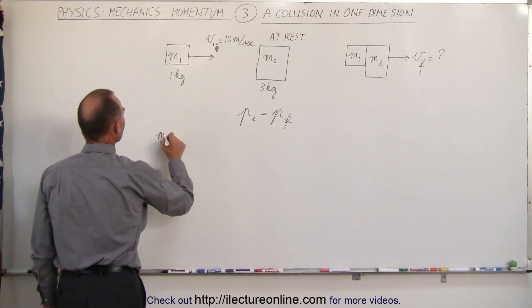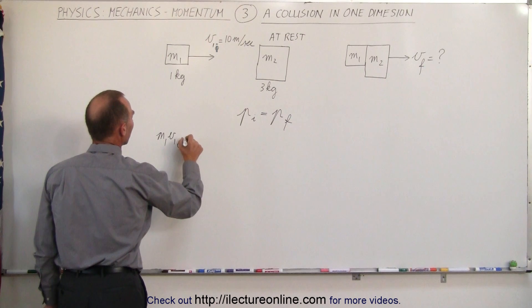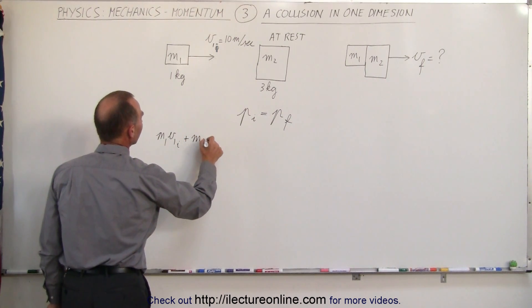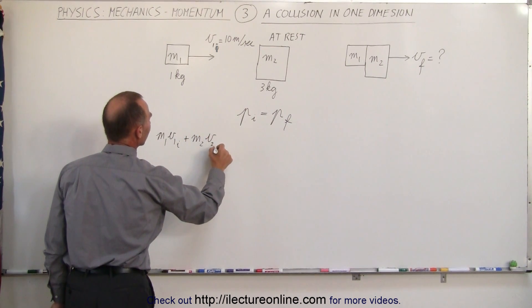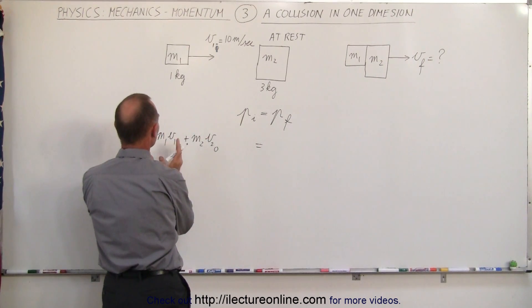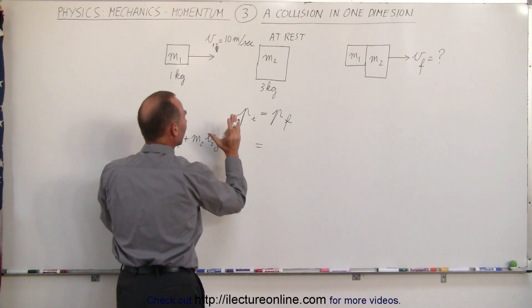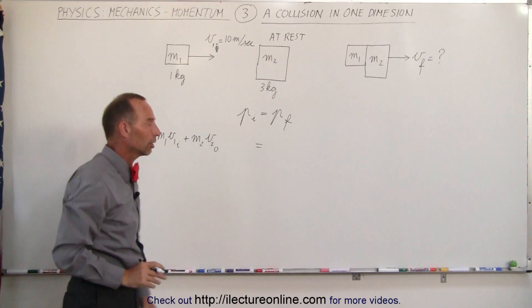So we have M1 times velocity of the first object initial, plus M2 times velocity of the second object initial. That's the momentum of the first object plus the momentum of the second object - that's the initial momentum of the whole system before the collision.